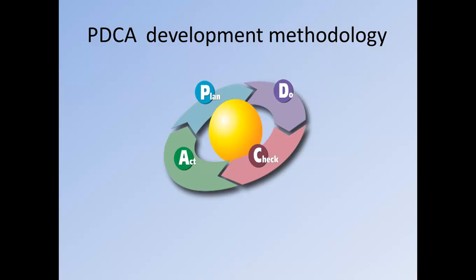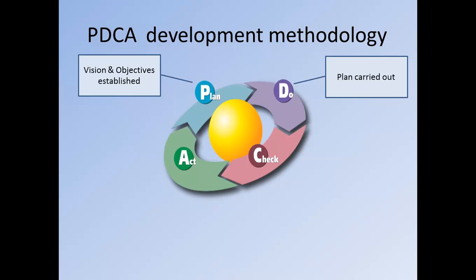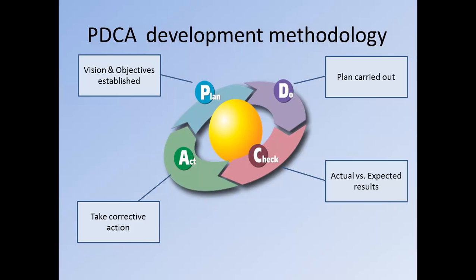The PDCA development methodology is as follows. Plan: decide on the objectives and processes necessary to achieve the vision. Do: this action requires the stakeholders involved to carry out the plan and make the product. Check: this is a measurement of the actual results carried out in the previous step against the expected results from the first step. Act: based on the differences between the actual and planned results, the root causes are found and corrective actions are taken to fix the issues at hand.